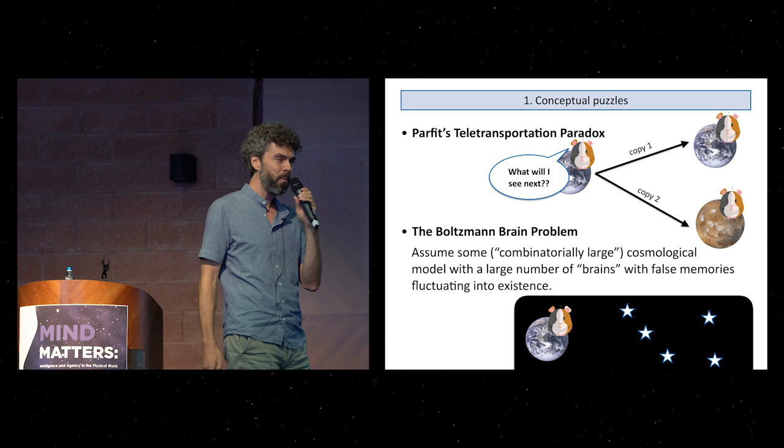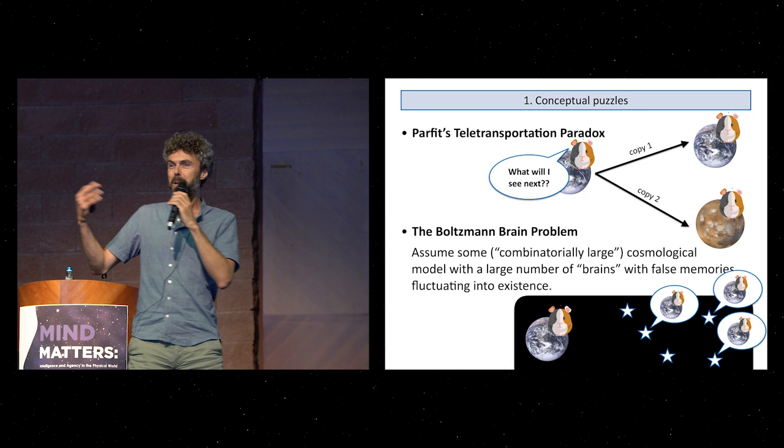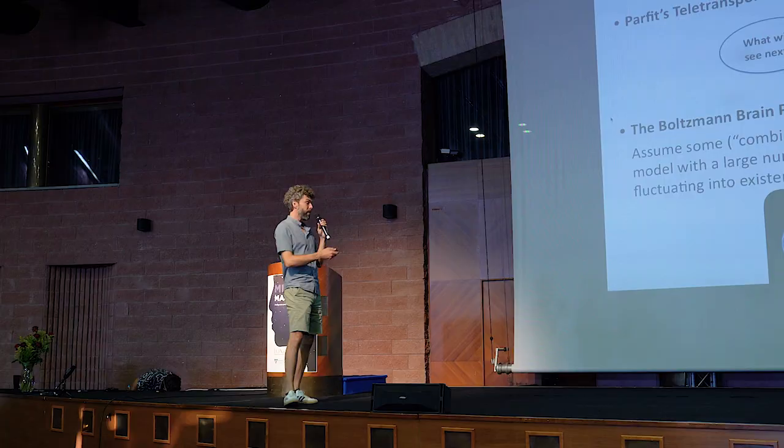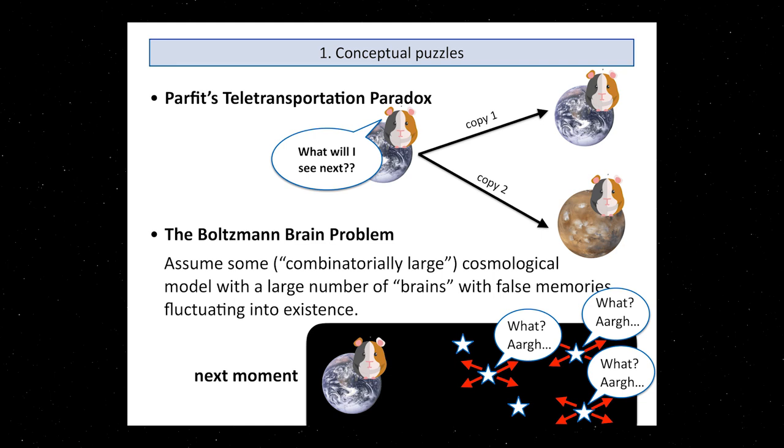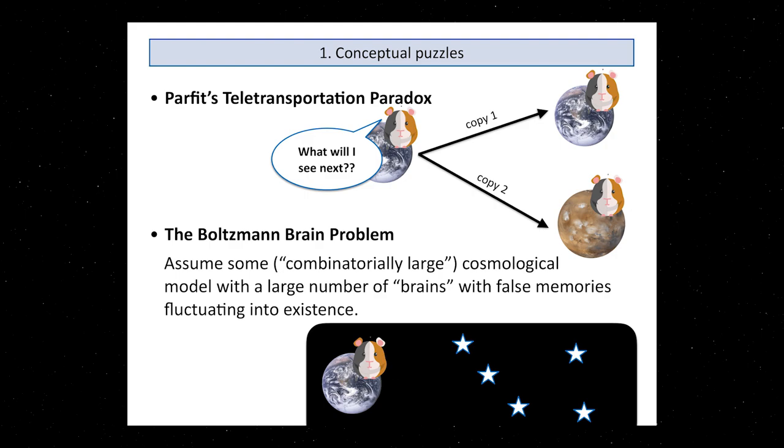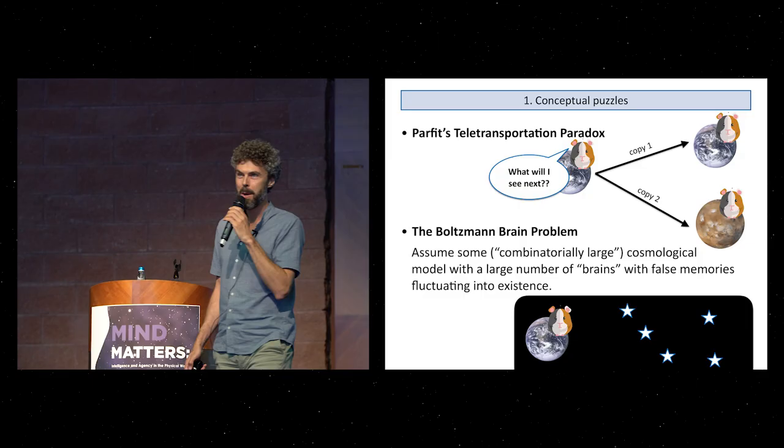These fluctuations are called Boltzmann brains. Think of a brain just popping up, thinking they've been on Earth all along or sitting here in the audience listening to this talk, where actually they just fluctuate into existence and then the next moment they will see something's wrong and then they may disappear. That's a poor man's version of that paradox.